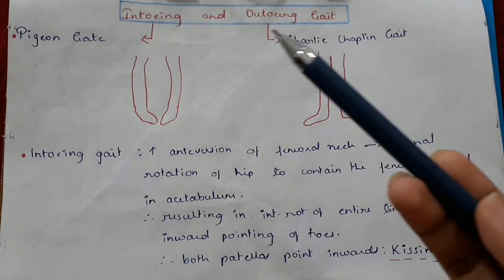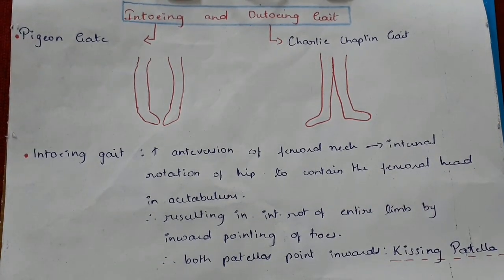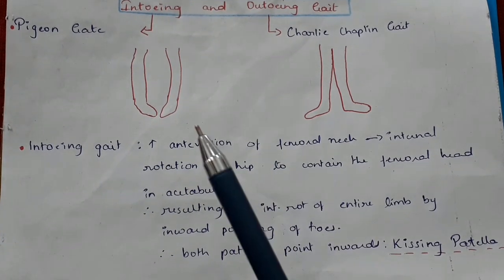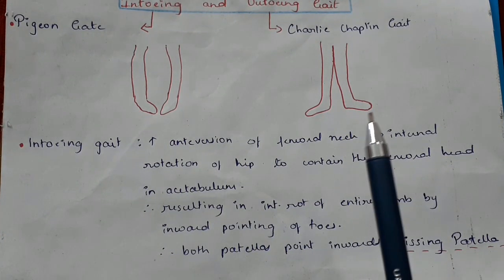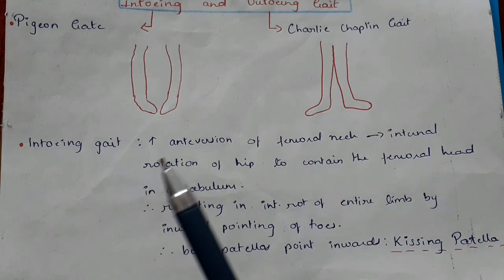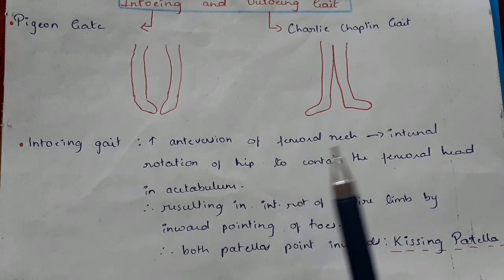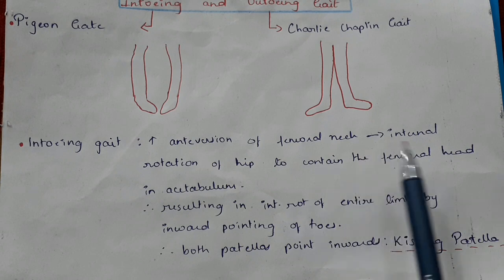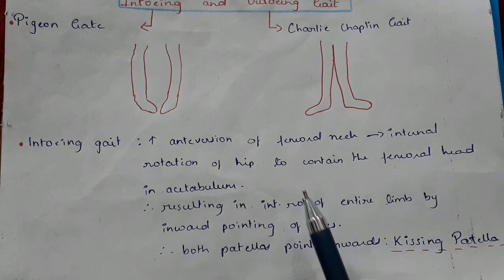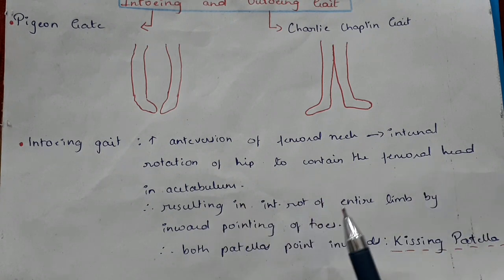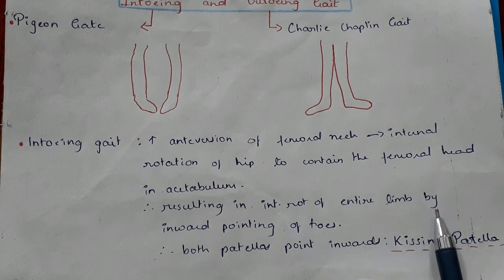In-toeing gait is also called the pigeon gait, and out-toeing gait is also called the Charlie Chaplin gait. In in-toeing gait, there is increased anteversion of the femoral neck, which results in internal rotation of the hip to contain the femoral head in the acetabulum, resulting in internal rotation of the entire limb with inward pointing of toes. Both patellas point inwards, which is called kissing patella.